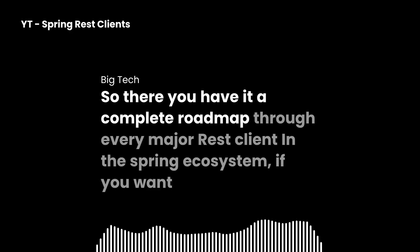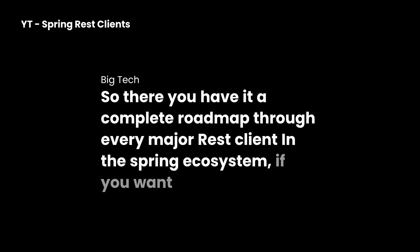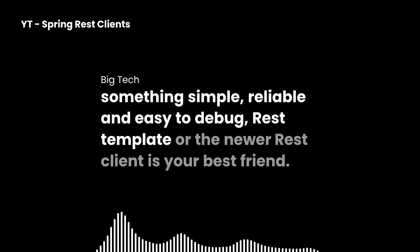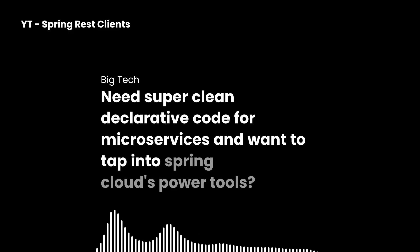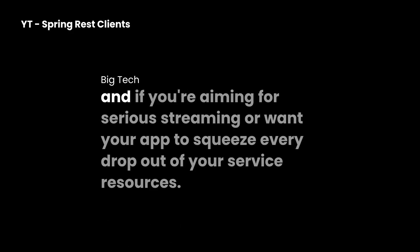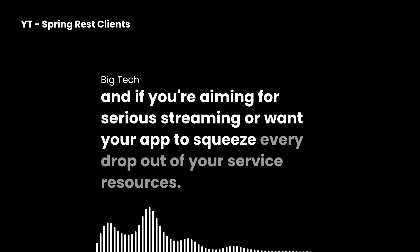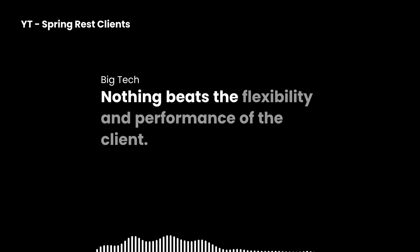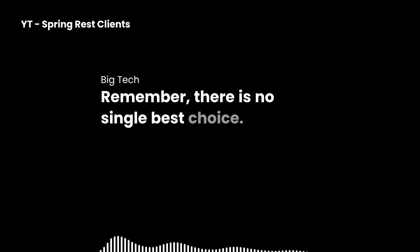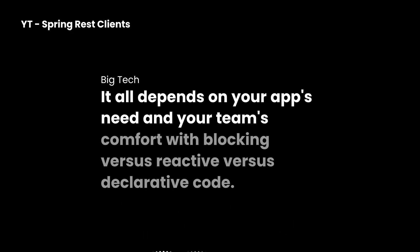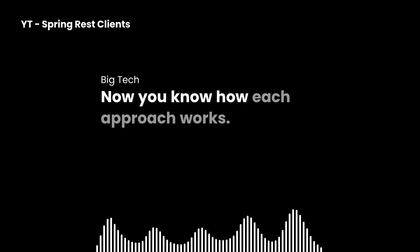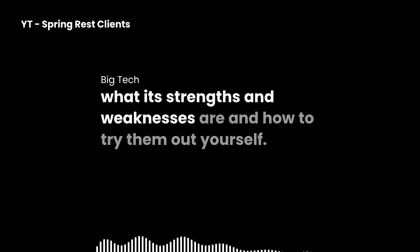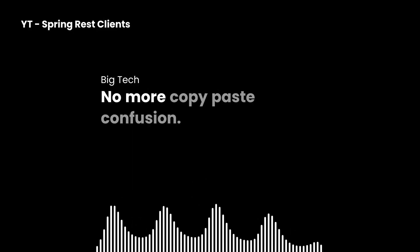So there you have it — a complete roadmap through every major REST client in the Spring ecosystem. If you want something simple, reliable, and easy to debug, REST template or the newer REST client is your best friend. Need super clean, declarative code for microservices and want to tap into Spring Cloud's power tools? OpenFeign is the way to go. And if you're aiming for serious streaming or want your app to squeeze every drop out of your server's resources, nothing beats the flexibility and performance of WebClient. Remember, there is no single best choice — it all depends on your app's needs and your team's comfort with blocking versus reactive versus declarative code. Spring gives you the freedom to mix and match, or switch styles as your app grows. Now you know how each approach works, what its strengths and weaknesses are, and how to try them out yourself. No more guessing, no more copy-paste confusion.